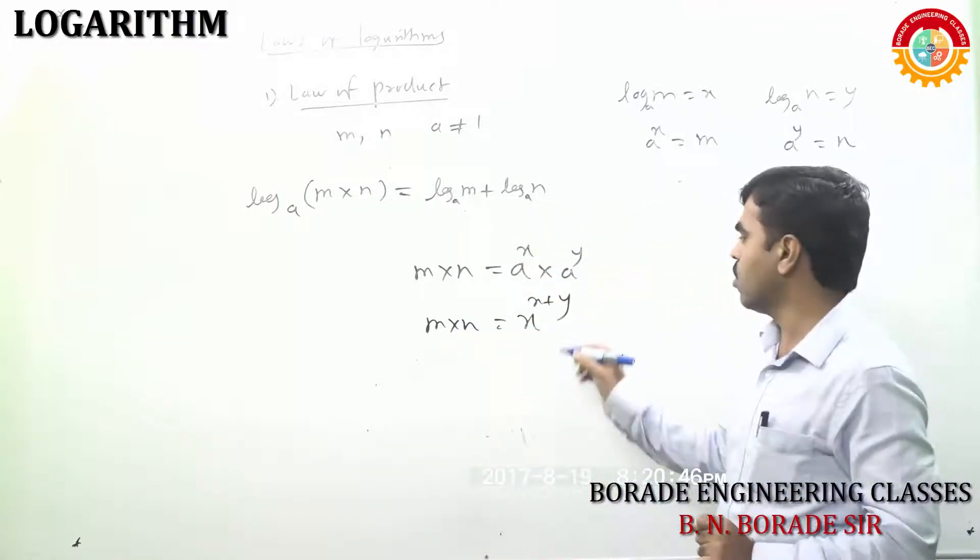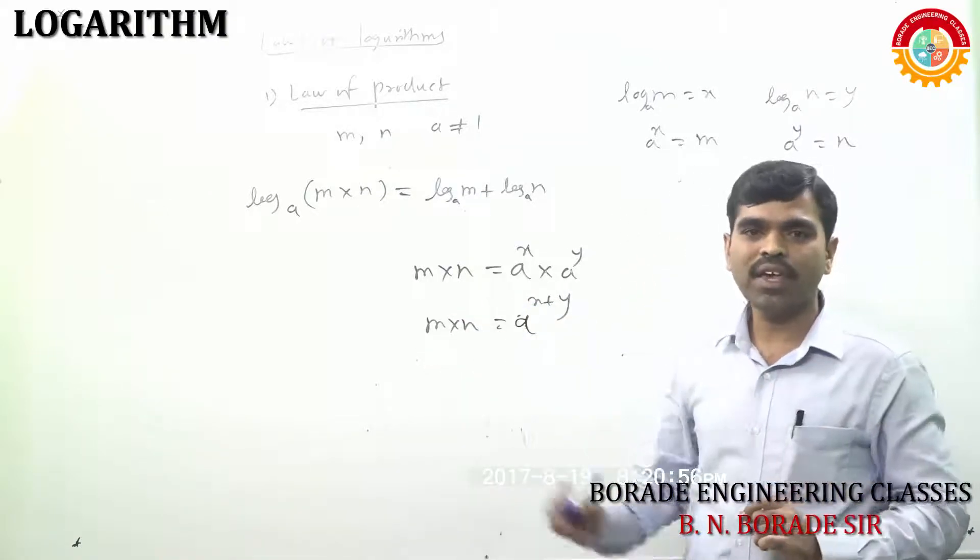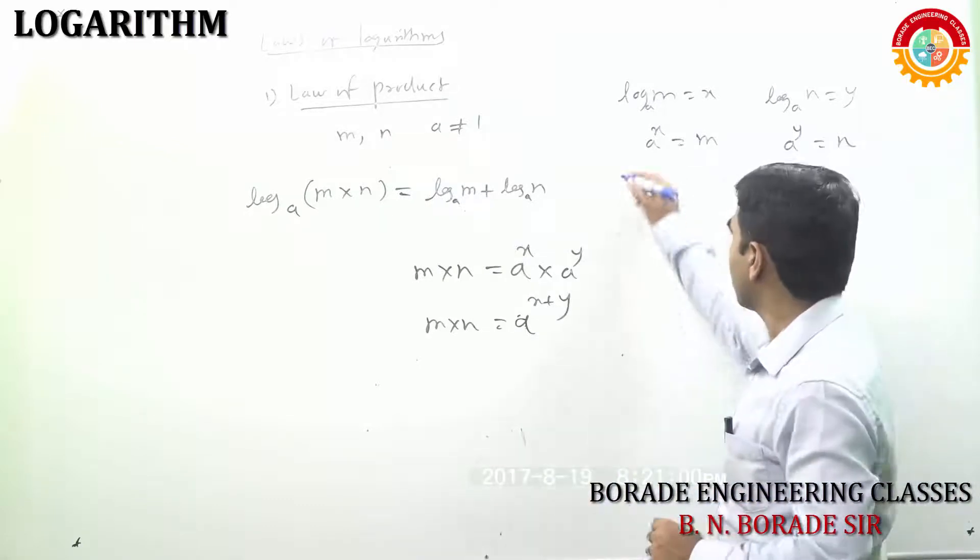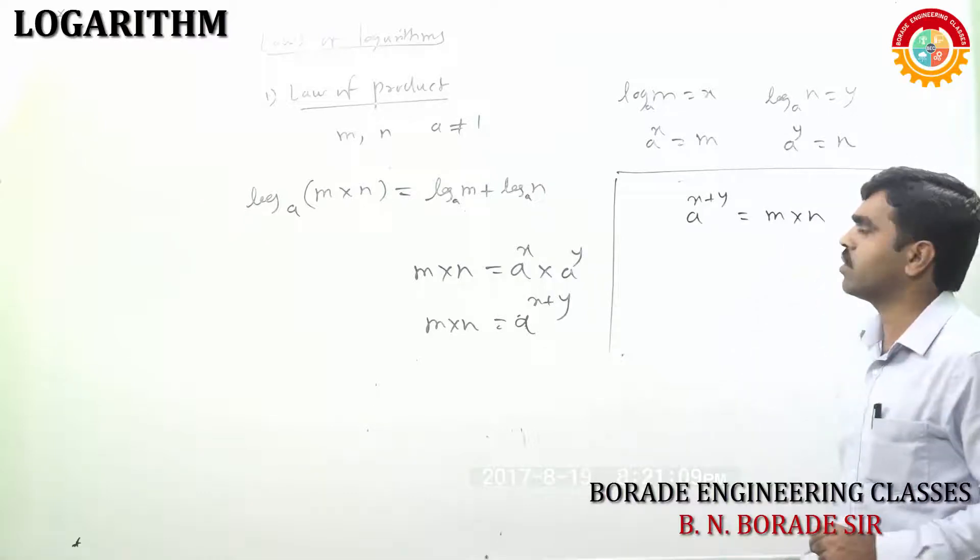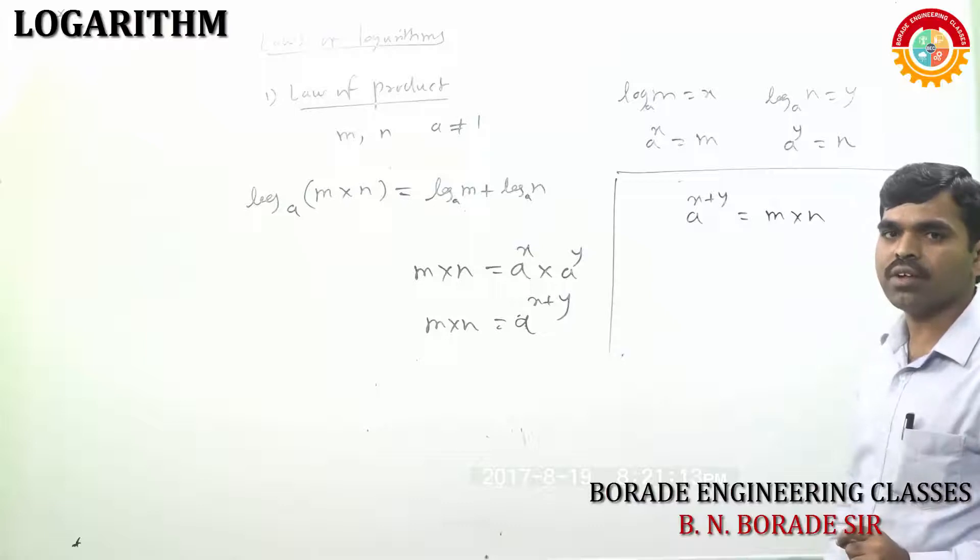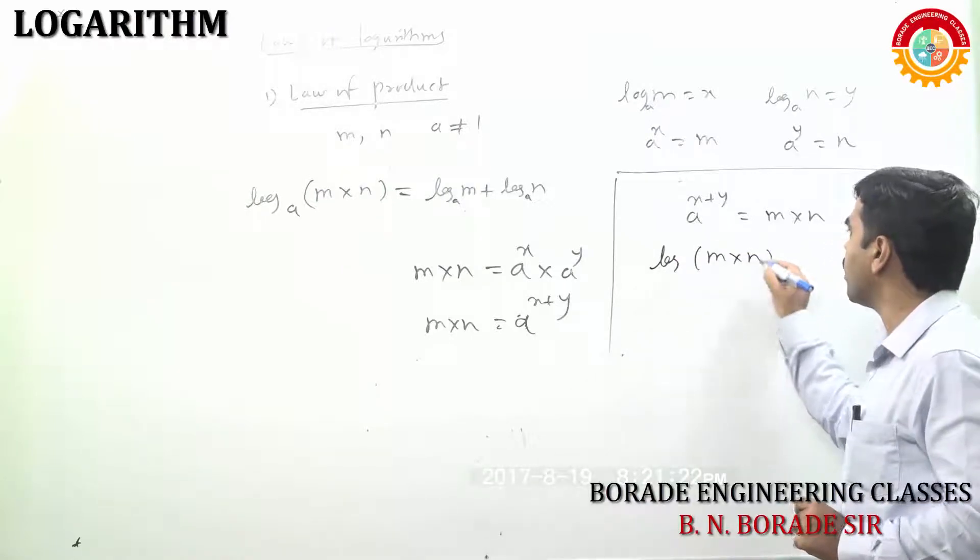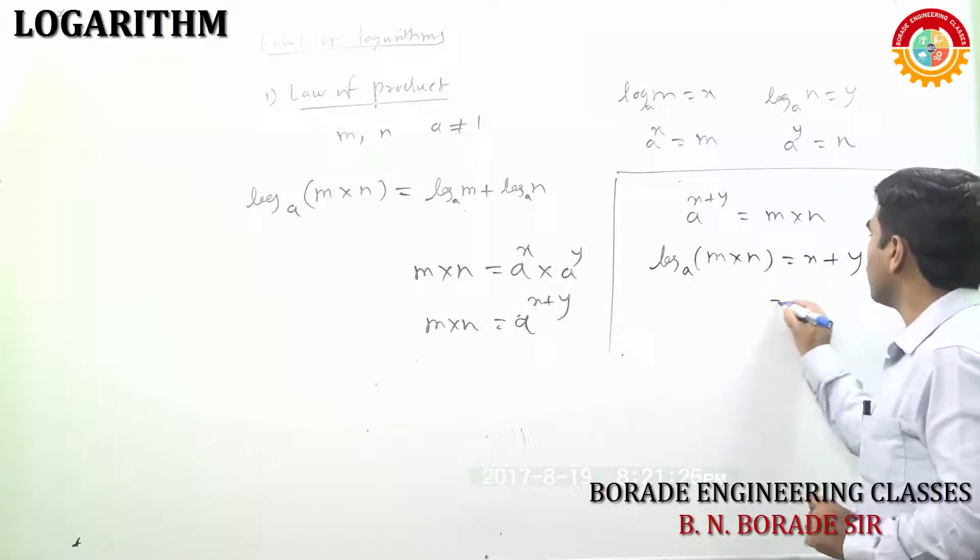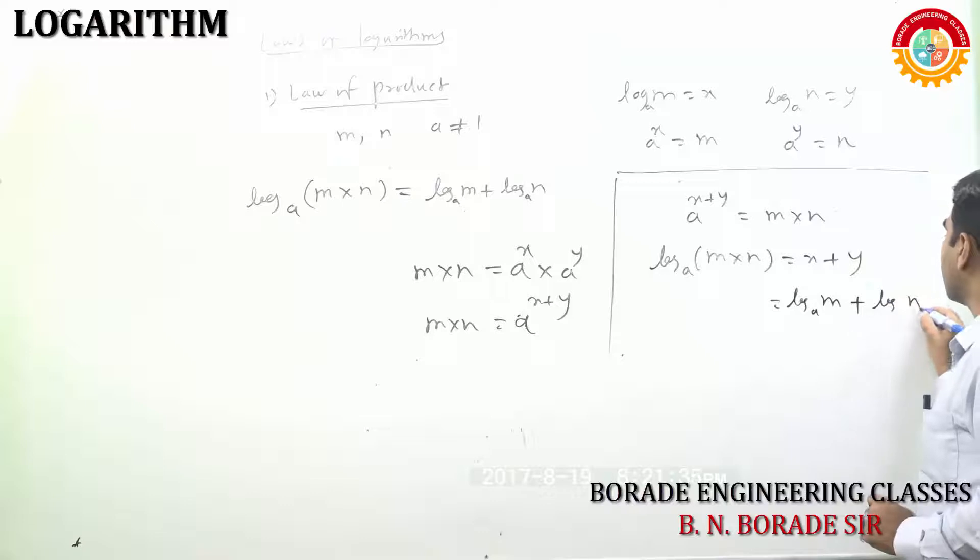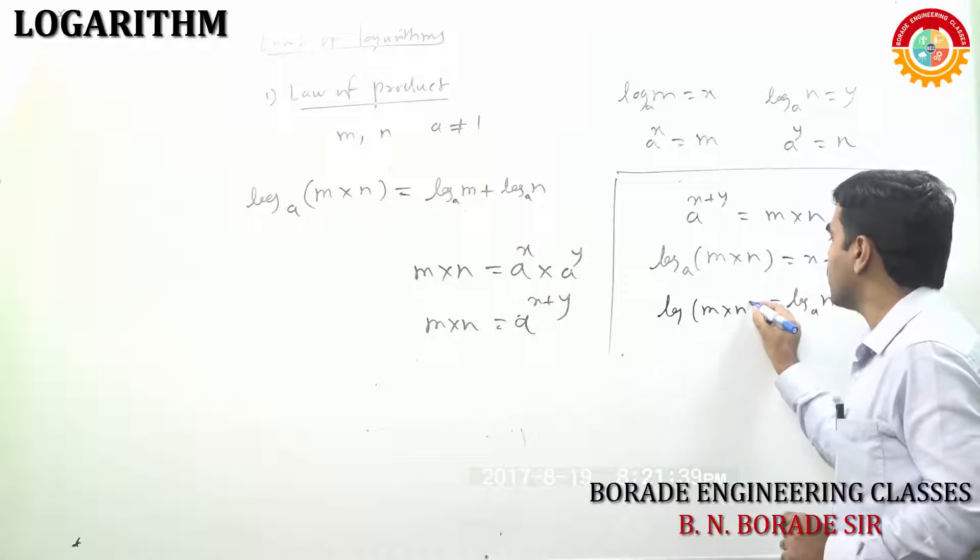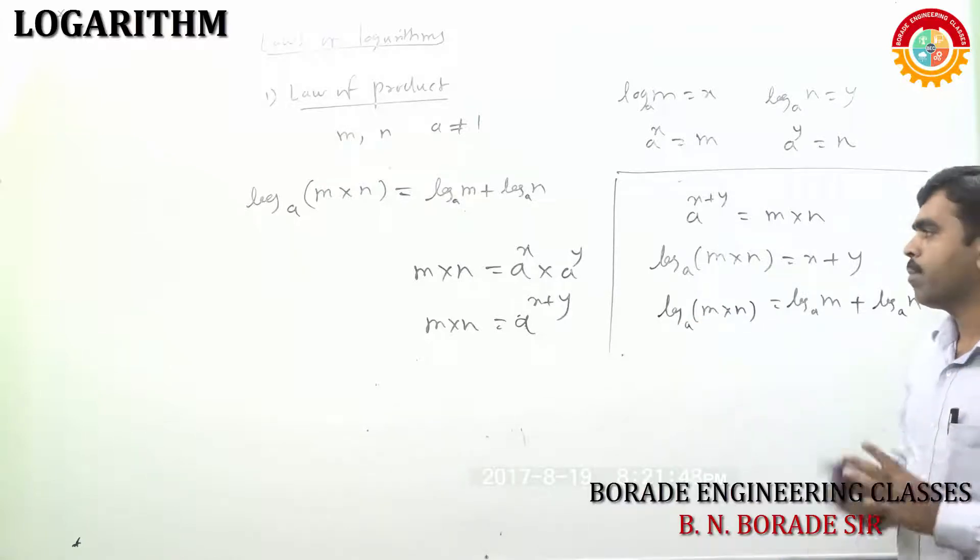A raise to X plus Y equal to M into N. This is again an exponential form. Yatsha apan zhar conversion karayet tharola into logarithmic form. A raise to X plus Y equal to M into N. Kas haa power jaha hai na X plus Y? Log of M into N when the base is A. Solution to yala log of M into N to the base A equal to X plus Y. What is X? X is log of M to the base A plus Y. What is Y? Log of N to the base A. This is law of product.